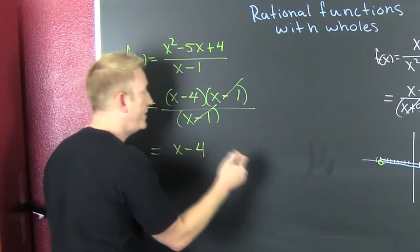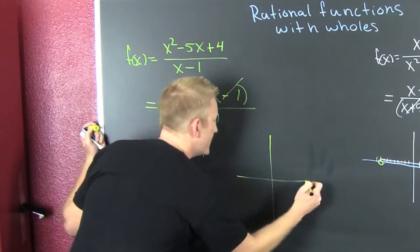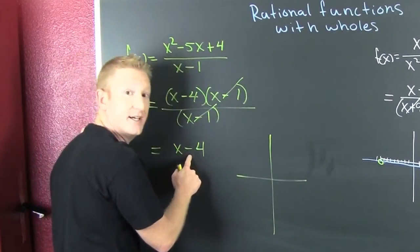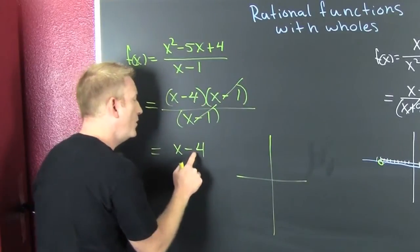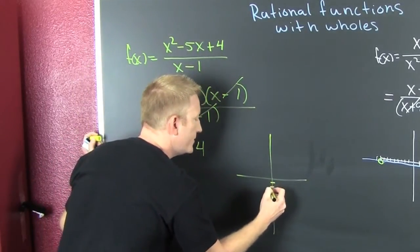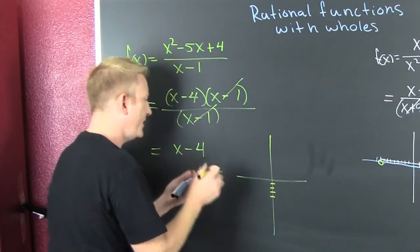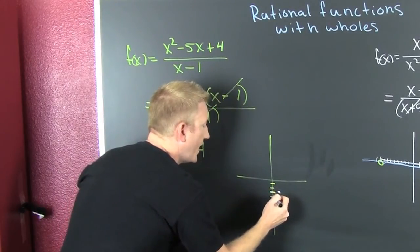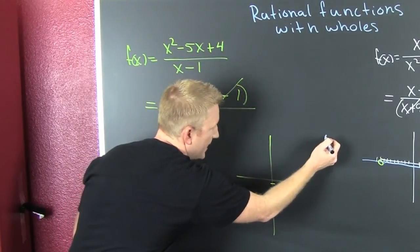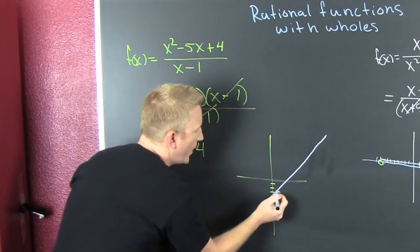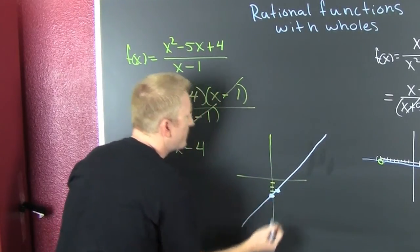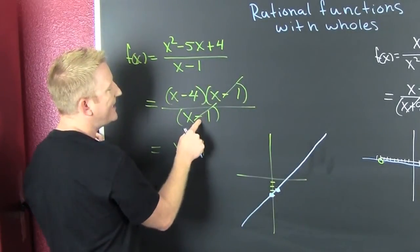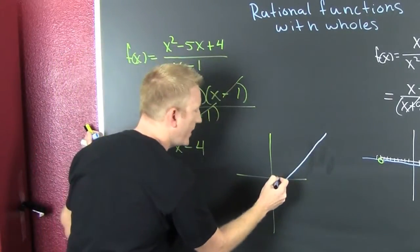So the graph of this guy is gonna be like x minus 4 with a hole at 1. You know how to graph these guys - it tells you where to start, it tells you where to go. You start at minus 4: one, two, three, four. It's linear, you go up one over one, so I go up one over one. I put a dot and I connect the dots.